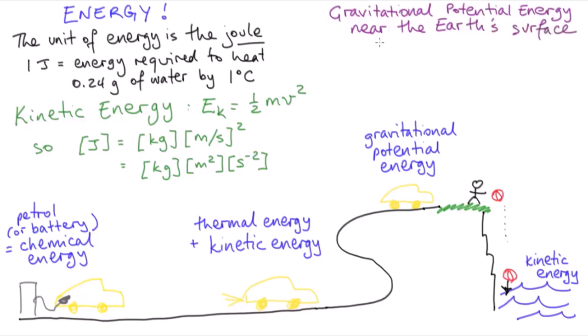For objects near the surface of the Earth, changing the height of an object corresponds to a change in gravitational potential energy proportional to the object's weight as follows. Remember little g here is acceleration due to gravity at the Earth's surface.